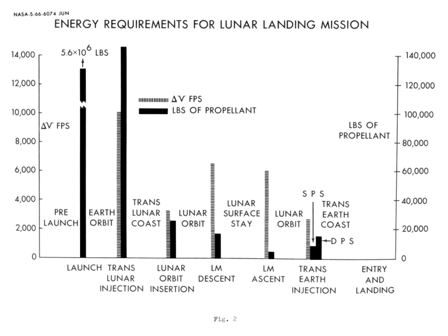In astrodynamics and aerospace, a delta-v budget is an estimate of the total change in velocity required for a space mission. It is calculated as the sum of the delta-vs required to perform each propulsive maneuver needed during the mission. As input to the Tsiolkovsky rocket equation, it determines how much propellant is required for a vehicle of given mass and propulsion system.